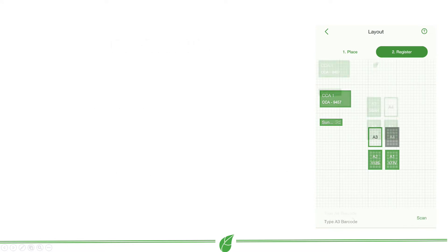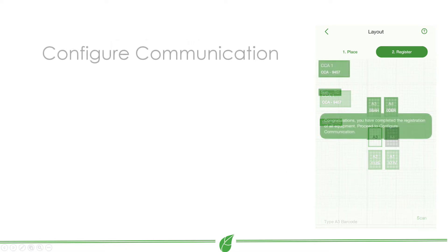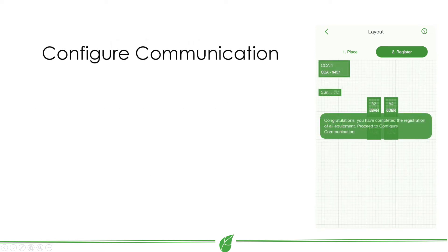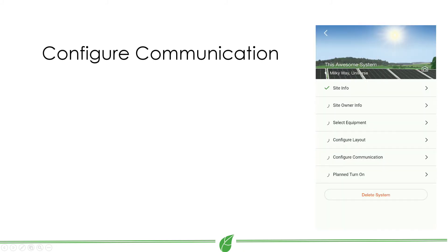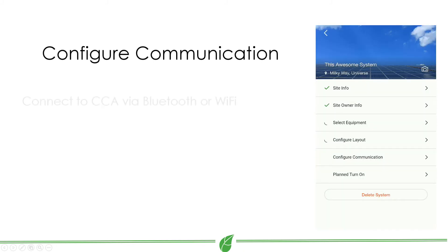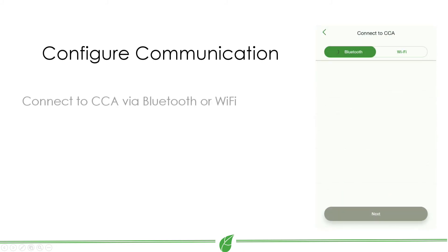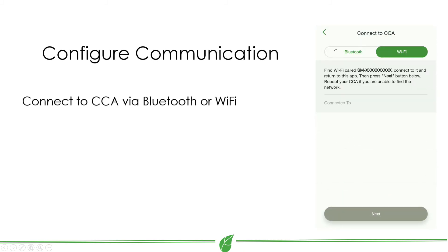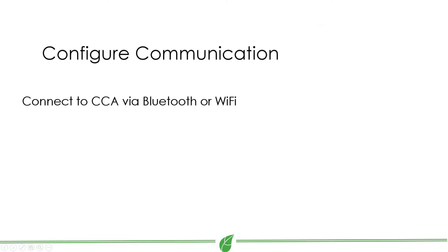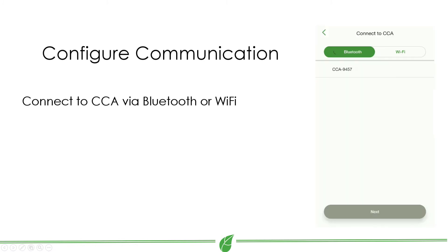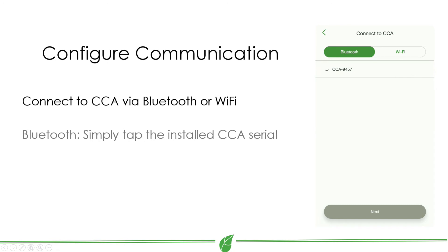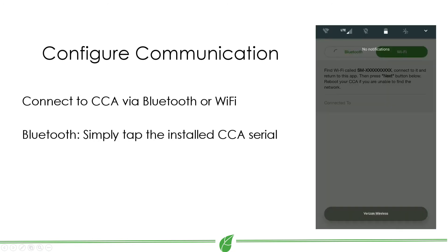Once you have configured the layout, configure the communication on site by connecting to a CCA via Bluetooth or Wi-Fi. Bluetooth is recommended for the most stable connection. Just tap the CCA with the matching serial number you wish to connect to, to pair it with your phone.